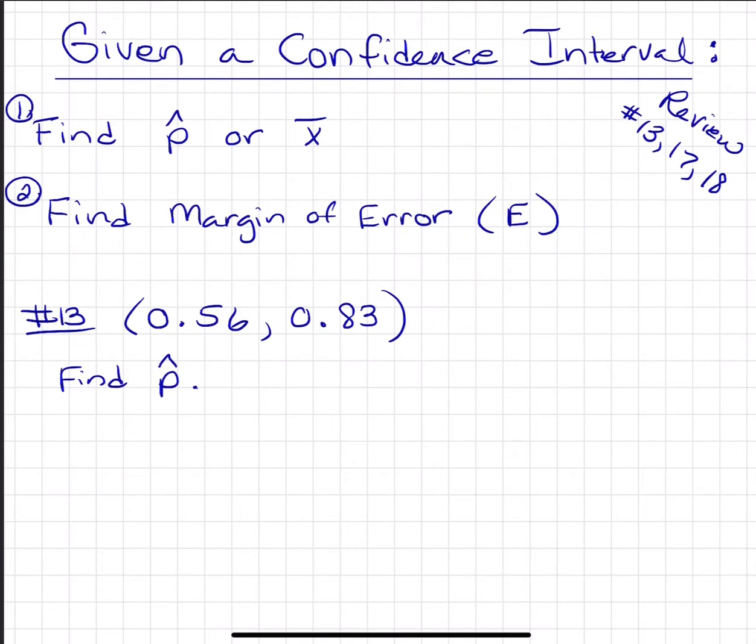What they do is they give you the confidence interval, which is your lower and your upper bound, and it'll either ask you to find either P hat or X bar.